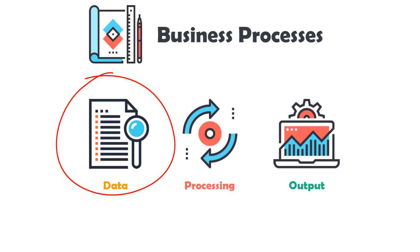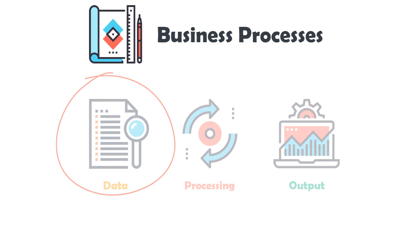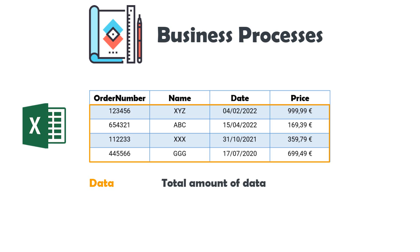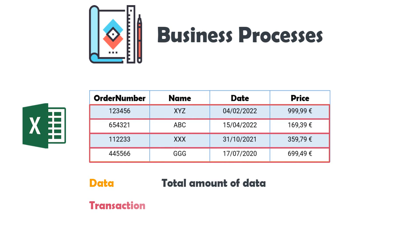Depending on the data, the process can be categorized differently. For example, the data can be an Excel file which consists of many rows. The rows which should be processed are called data — they represent the total amount of data. Each row from this file represents a transaction or transaction item, so a transaction represents the minimum amount of data.